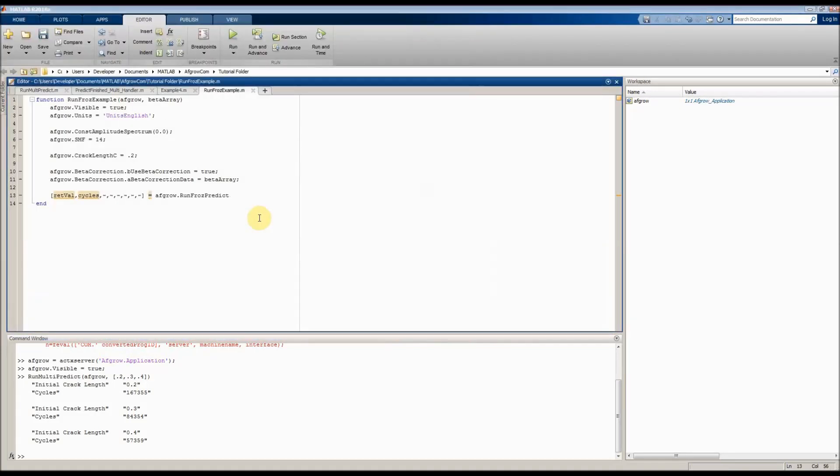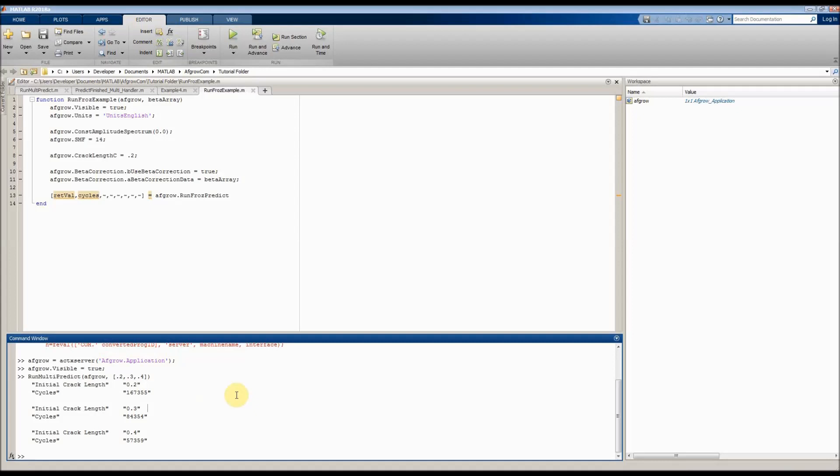We save our script file, and then now we can run it. So we'll come down here, and we already have an AFGRO object open. So now we can just say runFrozenExample. And we need to pass in our AFGRO object and our beta array. So the format of this was covered in the PowerPoints.